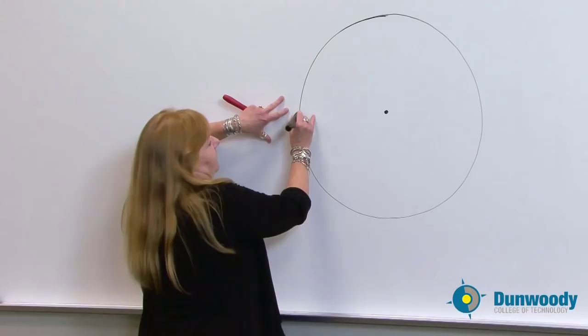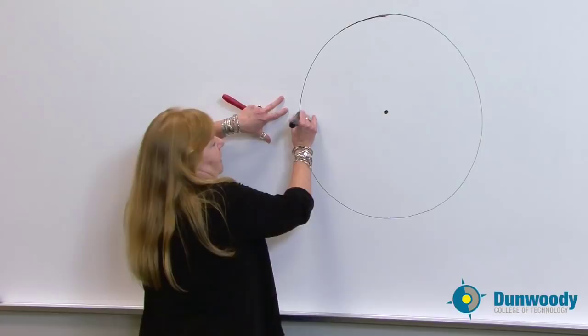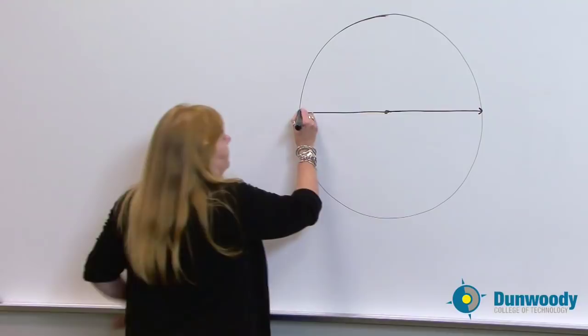And there is a center point of the circle. And the longest distance through a circle is starting at the outer edge, going right directly through the center to the outer edge. And this has a name. It's called the diameter.